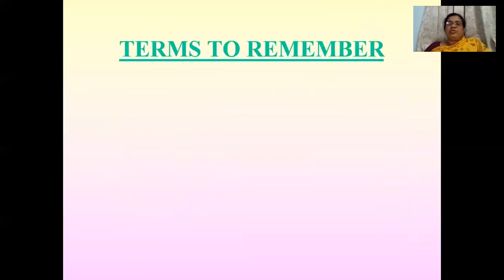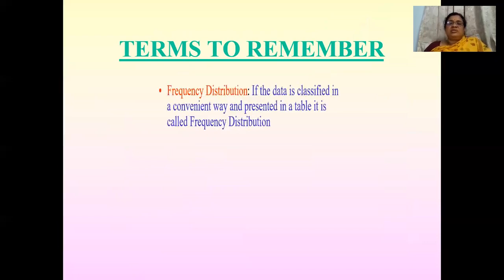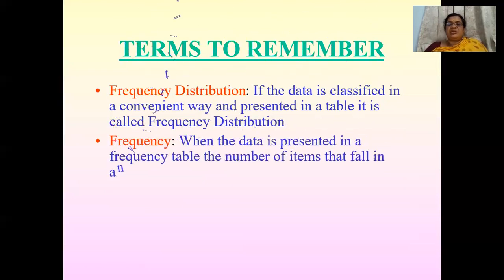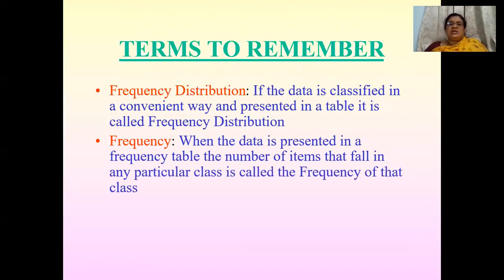Before moving on to the concept, let us remember some terms. The first is frequency distribution: if data is classified in a convenient way and presented in a table, it is called a frequency distribution. Frequency: the number of items that fall in a particular class is called the frequency of the class.